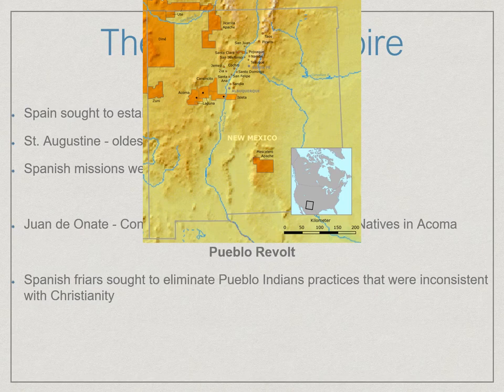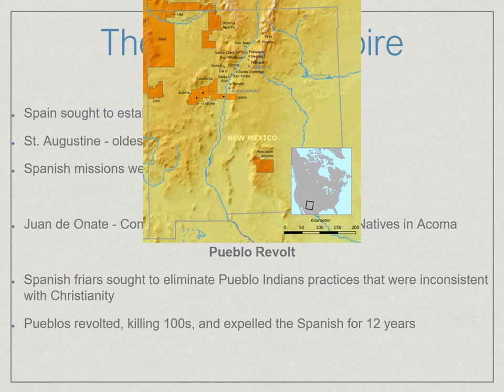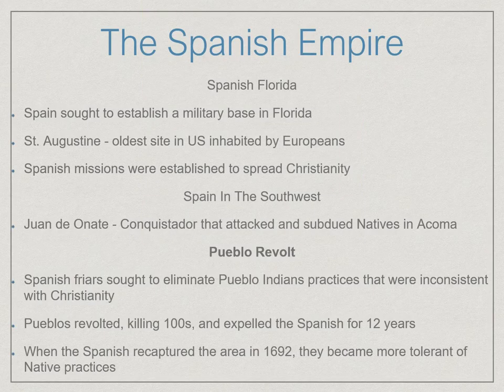Spanish priests who went to the Southwest region wanted to completely remove Native American religious practices, saying these practices were inconsistent with their faith and they wanted to do away with them. That was, as you can imagine, tremendously unpopular. The Pueblo people revolted against this, killed a couple hundred people, and for the next 12 years the Spanish were unable to have a presence in this region at all. Ultimately, in 1692, the Spanish were able to recapture the region, and from that point on they were willing to be a lot more tolerant of what the Native people were doing.